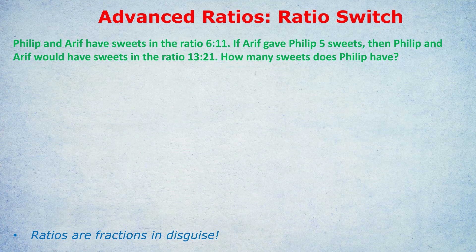First off, how do we identify a ratio switch question? It's when you see one starting ratio and there's a change to the amounts and then a new ratio is created. So two different ratios. One ratio switching into a different ratio. For example, the question you can see in green at the top: Philip and Arif have sweets in the ratio 6 to 11. If Arif gave Philip 5 sweets, then Philip and Arif would have sweets in the ratio 13 to 21. How many sweets does Philip have? One ratio 6 to 11 has now switched or changed to become another ratio 13 to 21, obviously because the amounts of sweets have now changed.